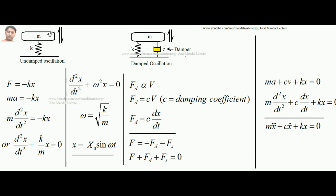First of all we will review something in regards to vibration. If there is a mass over a spring and this mass is vibrating on this spring, such type of vibration is called undamped vibration or undamped oscillation. Damped oscillation is the one in which some force is acting to reduce the vibration — to reduce the amplitude of vibration — which is trying to kill the energy of vibration. In case no force is acting to stop the vibration, it is called undamped vibration.